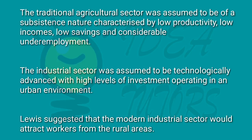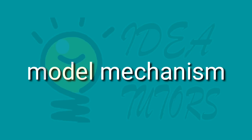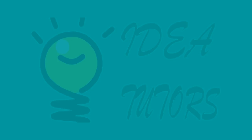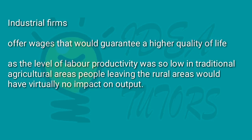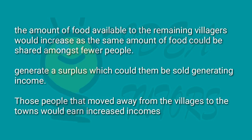Lewis suggested that the modern industrial sector would attract workers, as industrial firms — whether private or publicly owned — could offer wages that would guarantee a higher quality of life than remaining in rural areas could provide. Furthermore, as the level of labor productivity was so low in traditional agricultural areas, people leaving the rural areas would have virtually no impact on output. Indeed, the amount of food available to the remaining villagers would increase, as the same amount of food could be shared amongst fewer people.